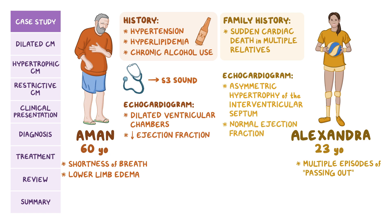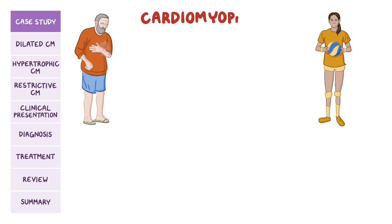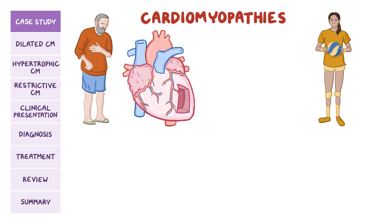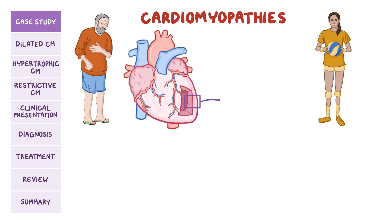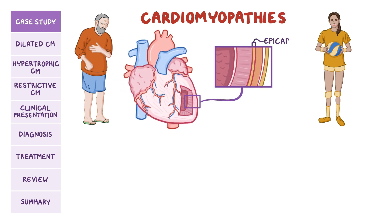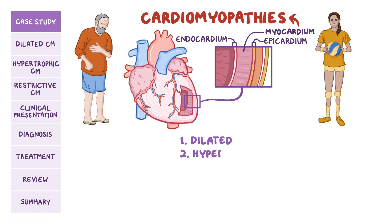Both Amon and Alexandra have cardiomyopathies. From outside to inside, the heart is made of the epicardium, myocardium, and endocardium. Diseases that affect the myocardium are called cardiomyopathies. The three main subtypes are dilated, hypertrophic, and restrictive cardiomyopathy.